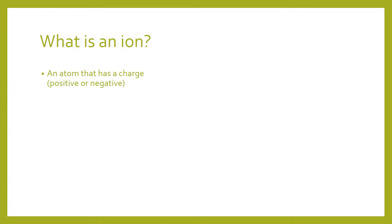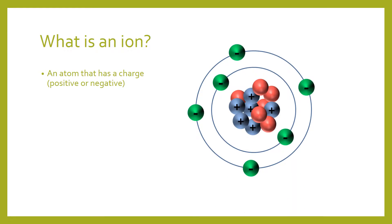An ion is an atom that has a charge — it can be either positive or negative. For example, with our carbon atom we have six positives and six negatives, but if we take one electron away, we have five negatives and six positives, giving us a charge of plus one.